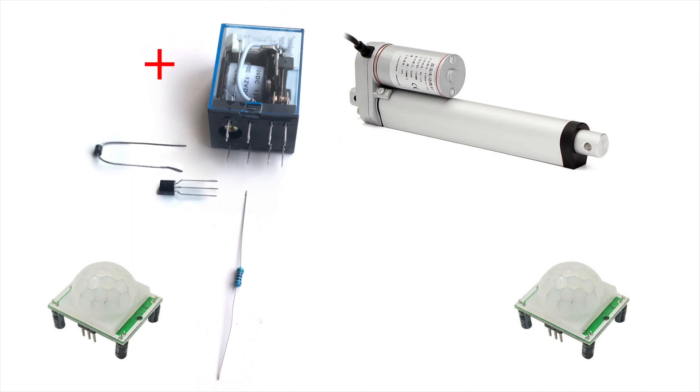Because the output signal of the motion detector is not powerful enough to switch the relay, we use the transistor as an amplifier. The diode is required to protect the rest of the electronics from voltage spikes produced by the relay.